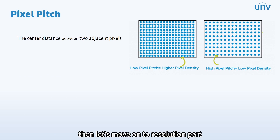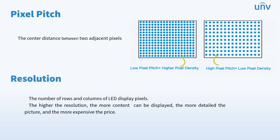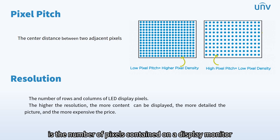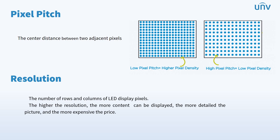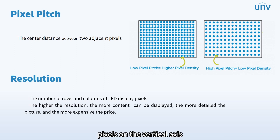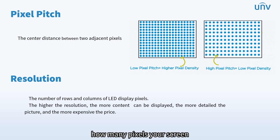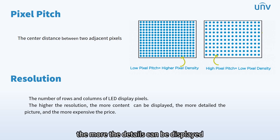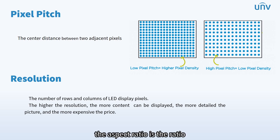Then let's move on to resolution. Resolution is the number of pixels contained on a display monitor, expressed in terms of the number of pixels on the horizontal axis and the number of pixels on the vertical axis. Screen resolution is a measurement of how many pixels your screen can display. The higher the resolution, the more details can be displayed, and also the more expensive the device is. The aspect ratio is the ratio between the width and height of the screen.